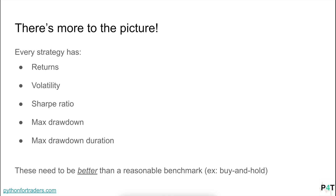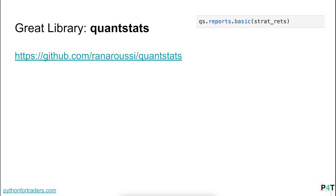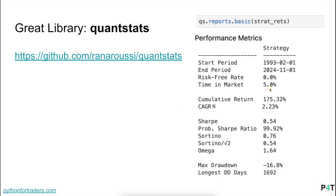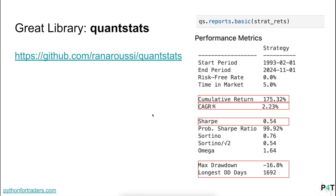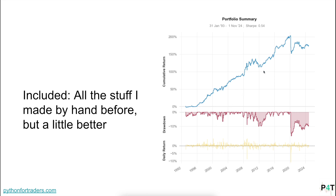There's more to the picture when running a backtest. We're looking at not only our overall returns, but also our volatility, Sharpe ratio, maximum drawdown, and drawdown duration — all of which need to be better than a reasonable benchmark, which in this case is buy-and-hold on SPY. We'll use a library called QuantStats to do it — it's open source on GitHub. Our cumulative return is 175% over the period. Keep in mind this is over 30 years, and our compounded annual growth rate is only 2%, so it's really not that good. Our Sharpe is 0.54 and our maximum drawdown is negative 16.8%.